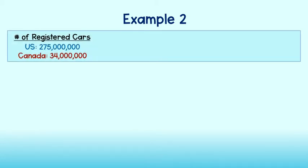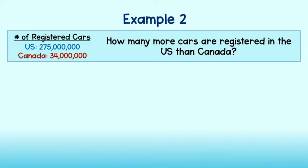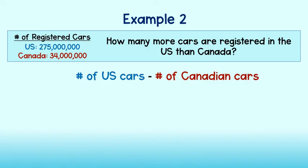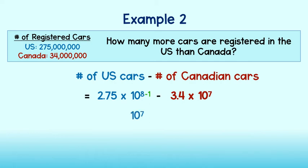Let's go back to our car problem. We know there are 275 million registered cars in the U.S. and 34 million cars in Canada. How many more cars are registered in the United States than Canada? To figure this out, we will subtract the number of cars in Canada from the number in the U.S. Let's first write each number in scientific notation. Now we must manipulate one of the expressions so that it has the same power of 10 as the other. Let's take 1 power of 10 away from the first expression to get 10 to the seventh power. Since this power is getting smaller, we must move the decimal of the first factor to the right to make this factor larger by a power of 10. The result is 27.5.